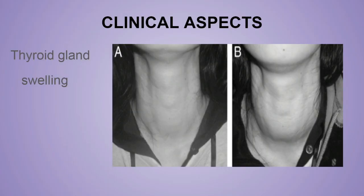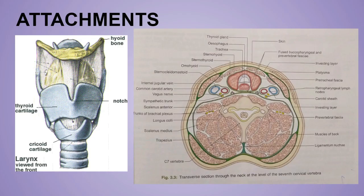Now, the clinical aspect of the pre-tracheal fascia. Any kind of neck infection that occurs in front of the pre-tracheal fascia — the bulging will occur in the suprasternal area or extend down into the anterior mediastinum. Remember, if any infection occurs in front of the pre-tracheal fascia, the bulging due to infection will occur in the suprasternal area or the anterior mediastinum.